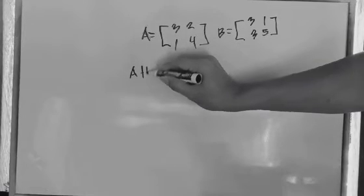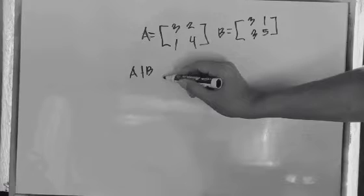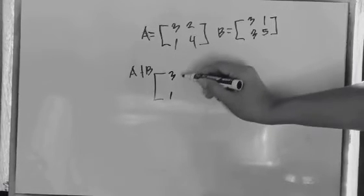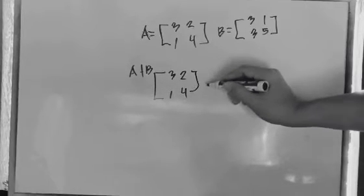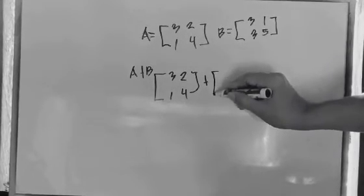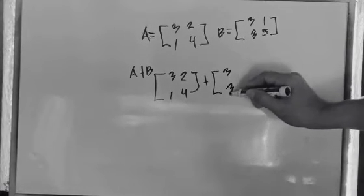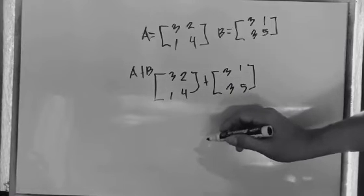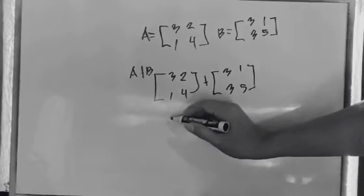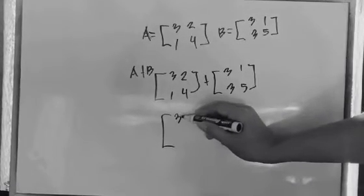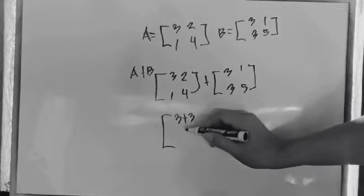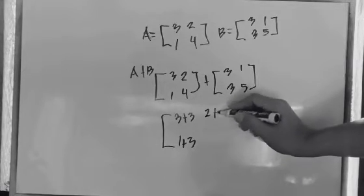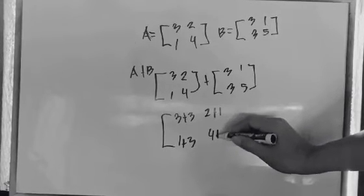Find matrix A plus matrix B. So we have [3, 1, 2, 4], which is the value of matrix A, plus the value of matrix B which is [3, 3, 1, 5]. To add, we go column by column: 3 plus 3, then 1 plus 3, 2 plus 1, and then 4 plus 5.